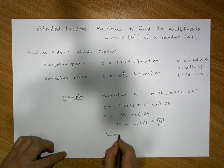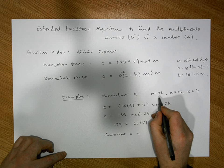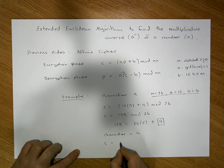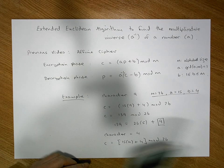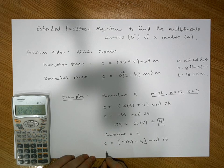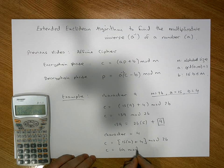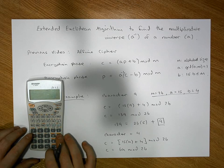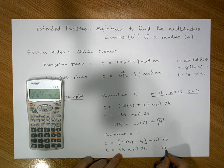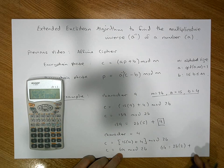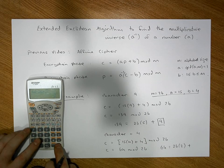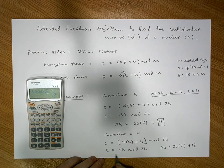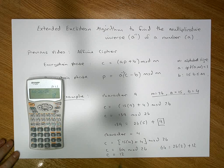Let's use another example. Say the character is 4, under the same conditions. The cipher text equals 15 times 4 plus 4, modulo 26. That's 60 plus 4 equals 64, modulo 26. 64 divided by 26 goes in twice, so 64 equals 26 times 2 plus a remainder of 12. So character 4 is encrypted to character 12.